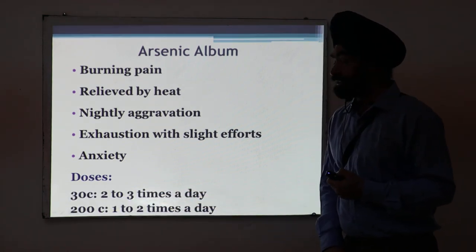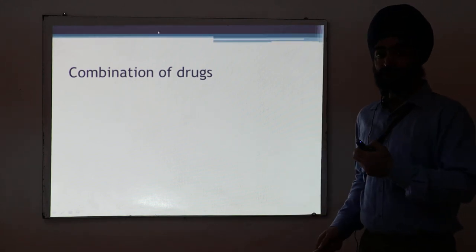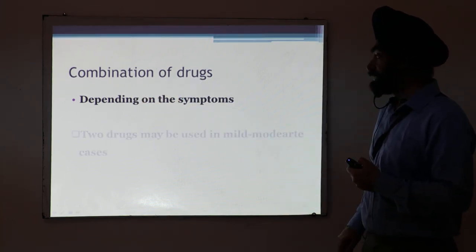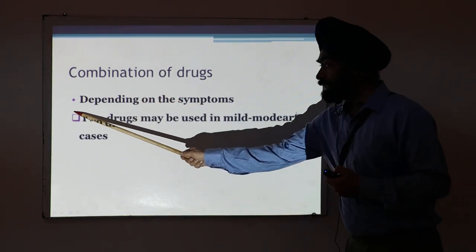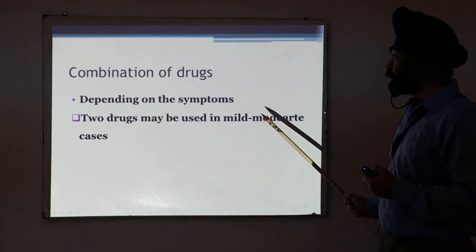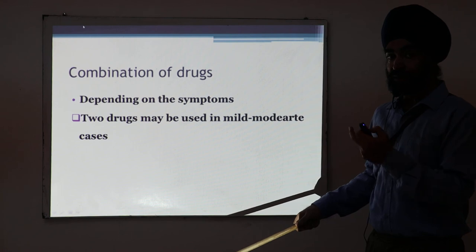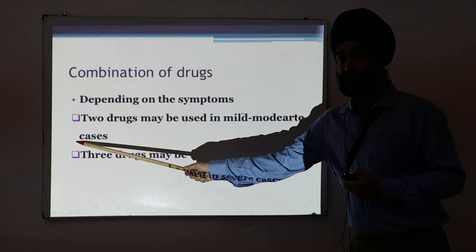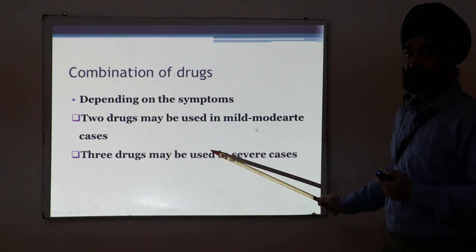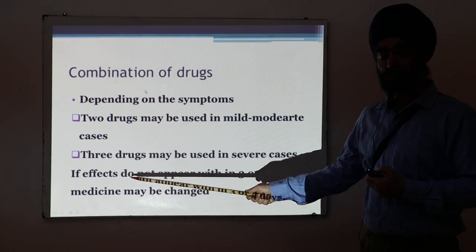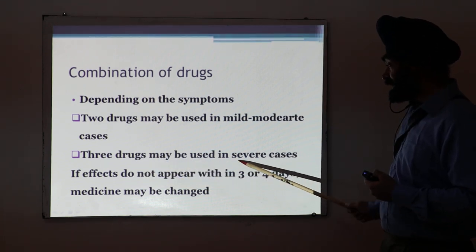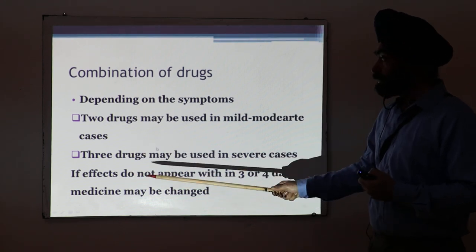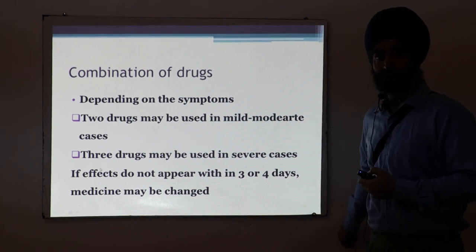I have now mentioned five medicines. You can assess the symptoms and, depending on the case, combine two drugs for mild to moderate cases. For very severe conditions, three drugs can be given. Try giving the medicines for two to three days or three to four days; if there is no effect, you can change the medicines. I hope this information will be useful. Thank you.